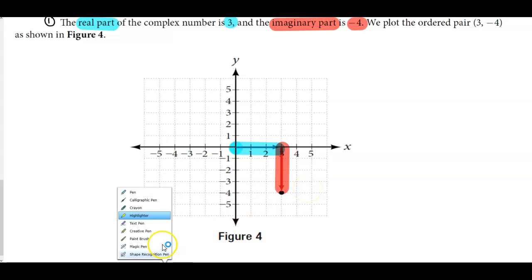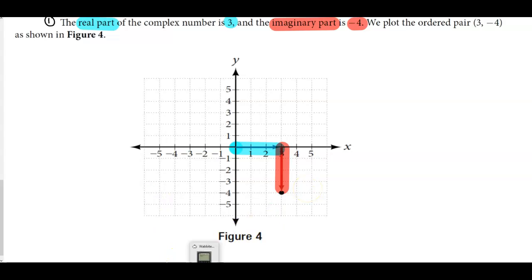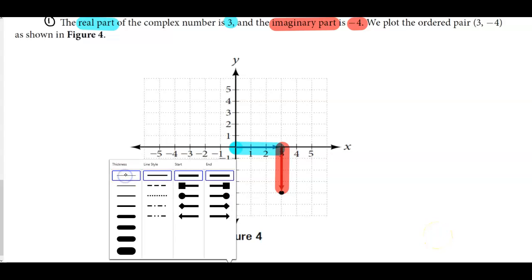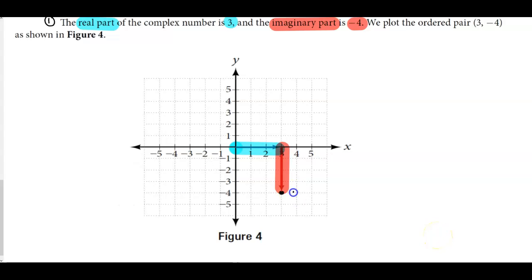We can then write what this complex number looks like on our graph. We can write this as 3 minus 4i.